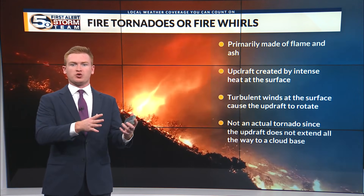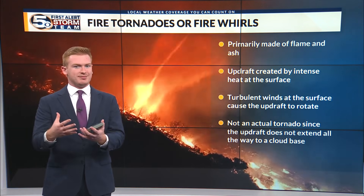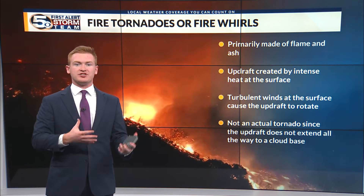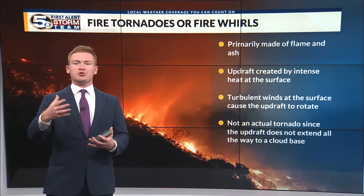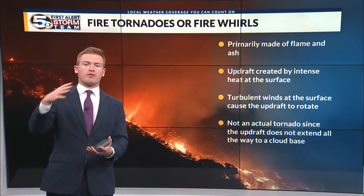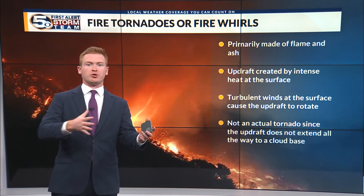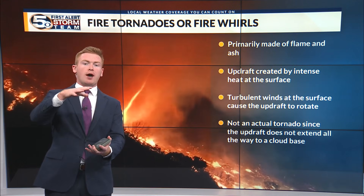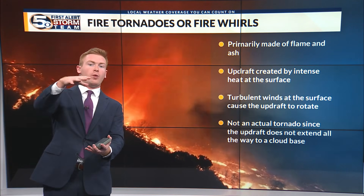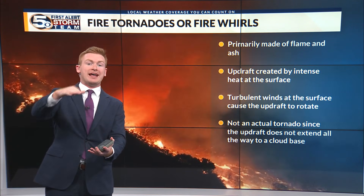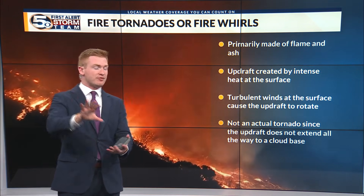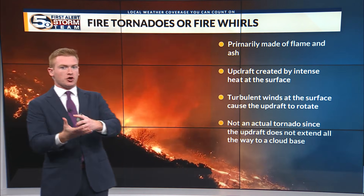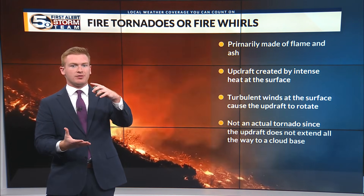With tornadoes that form due to thunderstorms, it's different. Instead of relying on heat from a fire, it's latent heat release from condensation or moisture, and that's used to create that strong vertical motion. You also have horizontal turbulent flow, just like you saw with the fire tornado. That creates a strong updraft, and that column stretches all the way to the base of a thunderstorm cloud. So that key difference is that the updraft within an actual tornado stretches all the way to the base of a thunderstorm cloud.